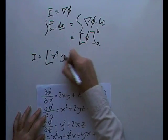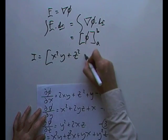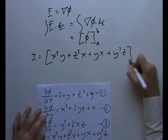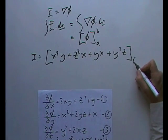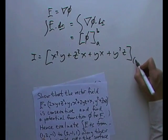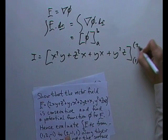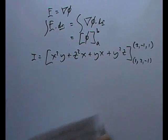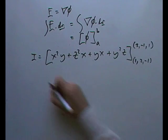x squared y plus z squared x plus yx plus y squared z going from the two points 1, 2, negative 1 to 2, negative 1, 1, which is just going to be a matter of arithmetic, of course.